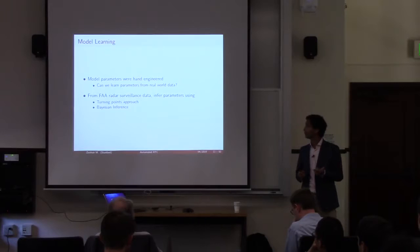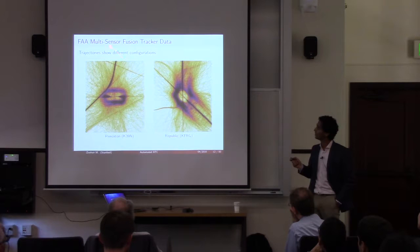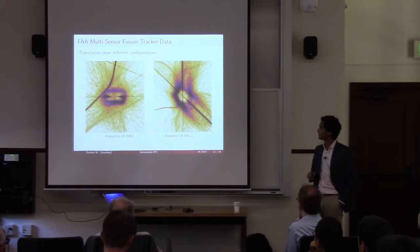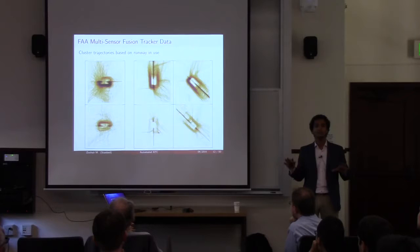Let me first describe what the data looks like — I like to say it's sometimes like hair in the sink, but there's still some structure to it. For example, this is Princeton: you can see some IFR tracks that never descend into the airport, but there's a pattern. This is Republic, a small towered airport with two runway configurations. We use unsupervised clustering methods to figure out the different configurations for each airport.